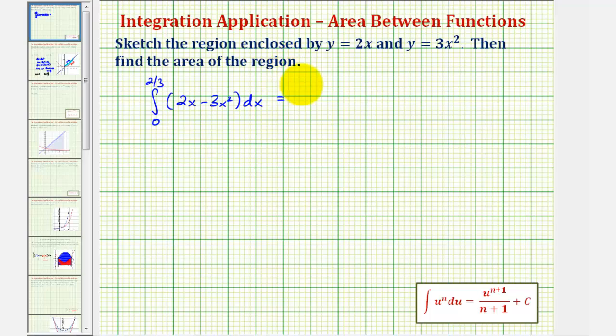So the anti-derivative of 2x would be 2 times x to the second divided by 2, minus the anti-derivative of 3x squared. That would be 3 times x to the third divided by 3. We evaluate this at 2 thirds and zero, and then find the difference. But let's simplify first. This would be x squared minus x cubed.